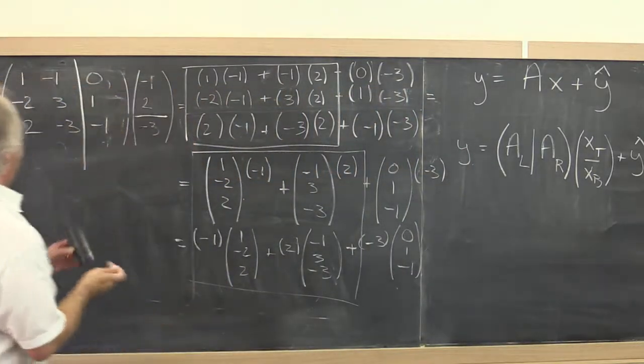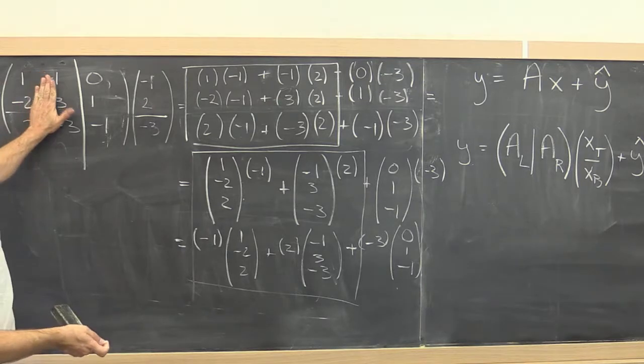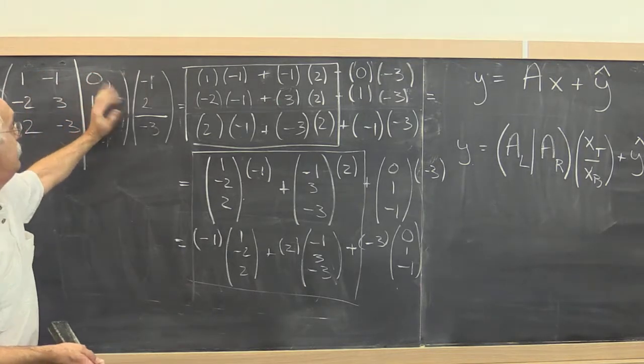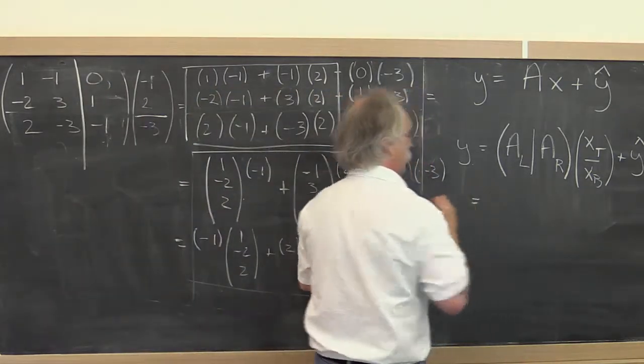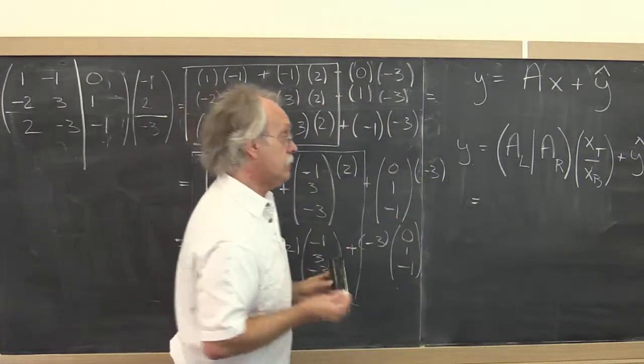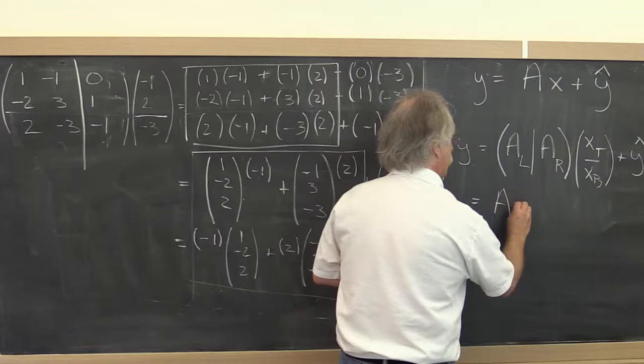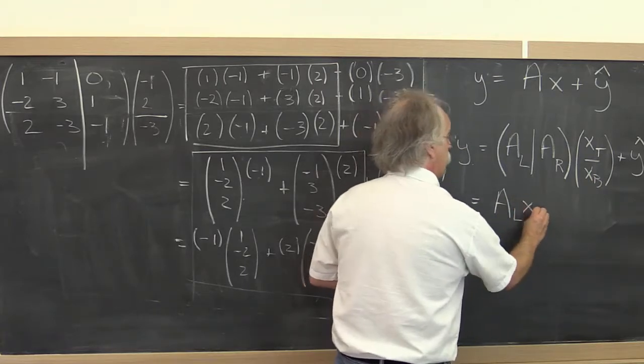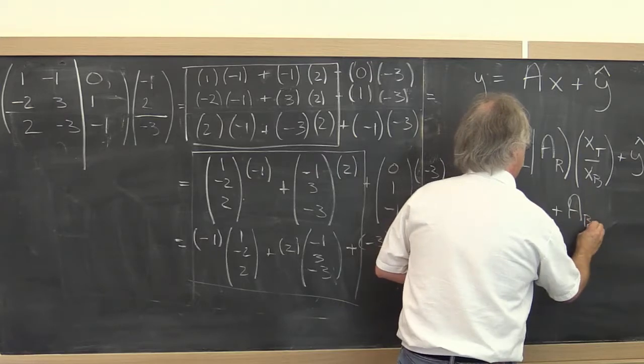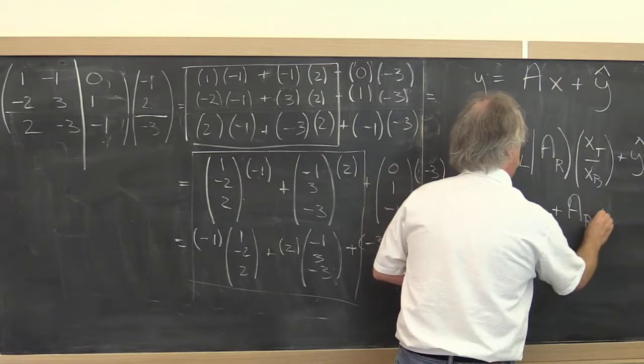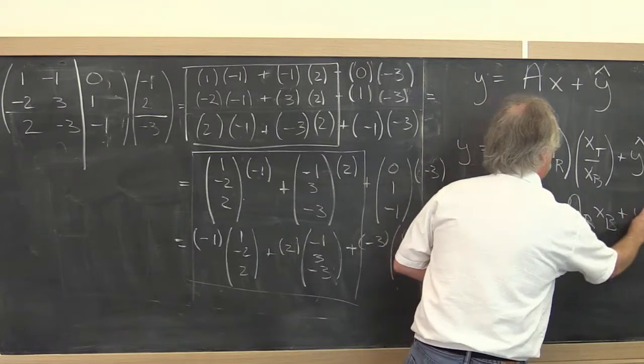And then the fact that you do this times that plus this times that over here suggests that linear algebra tells us that this is the same as the left part of A times x top plus the right part of A times x bottom plus y hat.